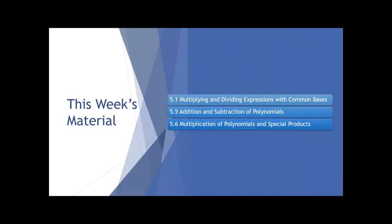For this week, you only need to read three sections: section 5.1 on multiplying and dividing expressions with common bases, and then we're skipping to 5.5 and 5.6 on addition and subtraction of polynomials and multiplication of polynomials and special products. The sections we're skipping, you will learn in college algebra. We're focusing on what you need to do so that you can add, subtract, and multiply polynomials.